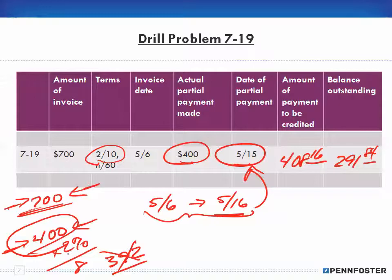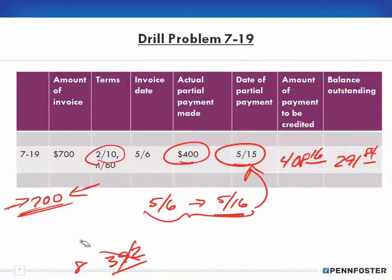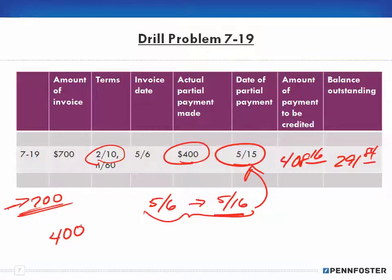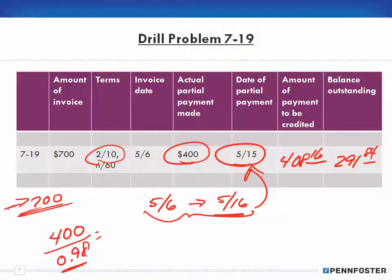Why would they only credit me $392 when I'm paying $400? I'd be losing money. So the normal line of thinking — just taking 2% off — is not correct here. The correct approach is that we're paying $400 but will be credited more than $400. To find that amount, we divide by 0.98 — that's 100% minus my 2% — so $400 divided by 98% gives us $408.16.